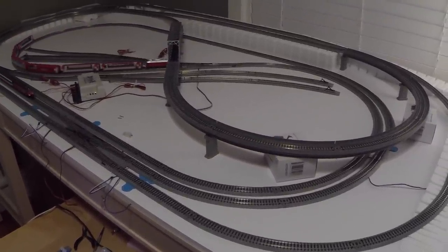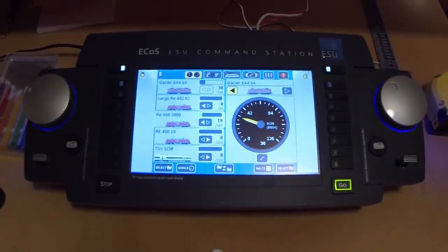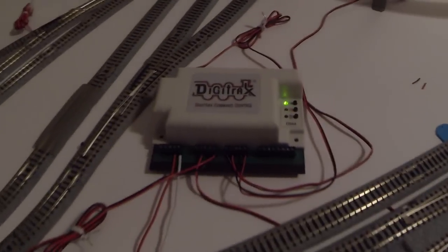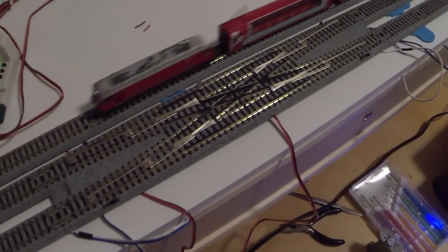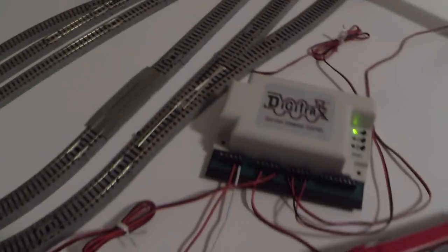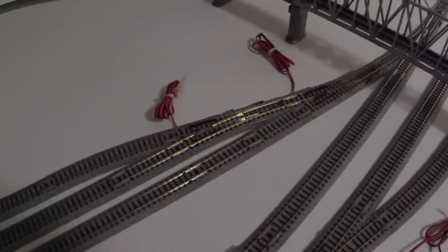I have Kato Unitrack, the ECOS ESU command station, and Digitrax DS64 controlling some switches. I've got a double crossover, a couple of number sixes, and a couple of number fours. Those aren't hooked up yet.